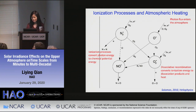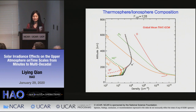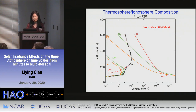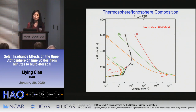Through this process, we have the thermosphere and the embedded ionosphere. In the ionosphere it is almost charge neutral, so the electron density is the sum of all ion densities. There is a peak of electron density called the ionosphere F2 peak. Even at this F2 peak, the number of electrons versus the number of neutrals is one versus 1,000. So the ionosphere is a very small part embedded in the thermosphere.